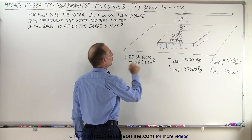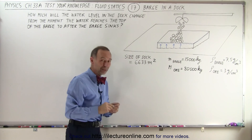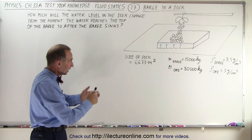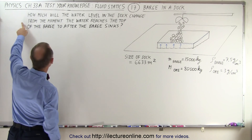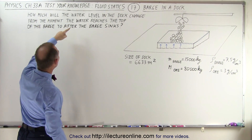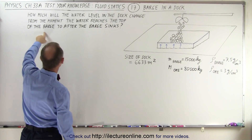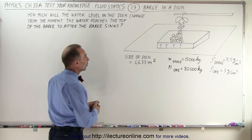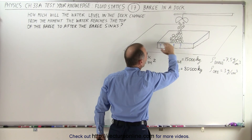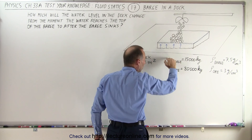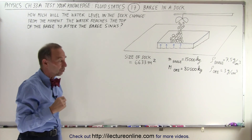The surface area of the dock is 6,633 square meters, and the question is how much will the water level in the dock change — up or down — from the moment the water reaches the top of the barge to after the barge sinks. So the water level will be at a certain point when the water reaches the very top of the barge, then the barge will sink, and we need to find how the level in the dock changes.